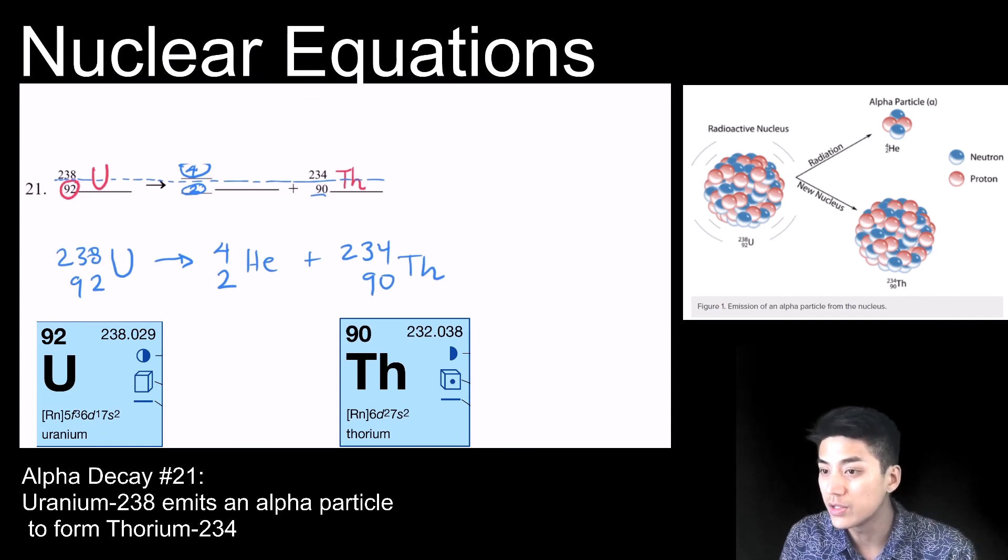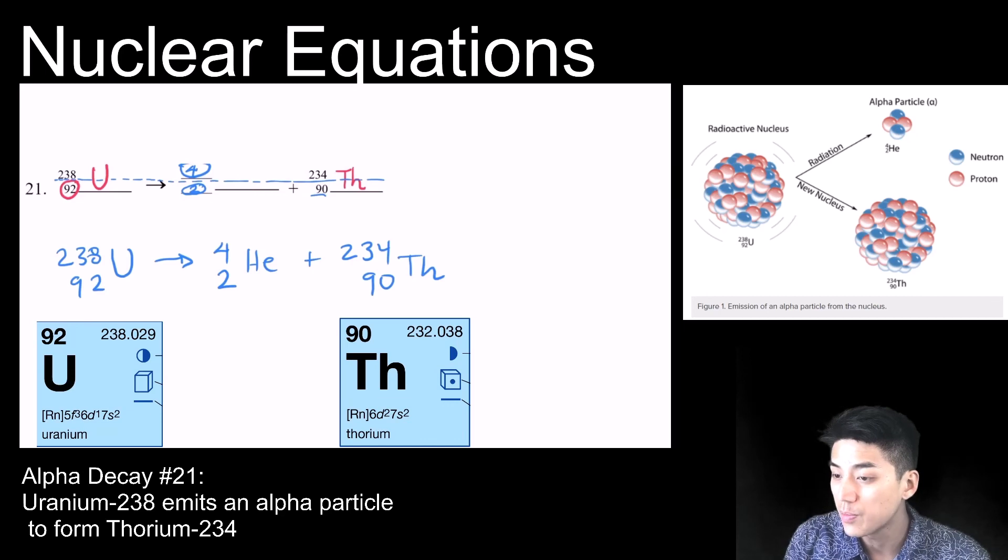But whatever you end up with is always going to have less mass. So once you think about it, you're starting with uranium, which has a mass of 238. And by the time you're done, you end up with thorium with a mass of 234. Exactly four less than what you started with.